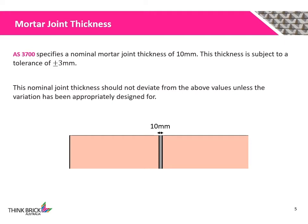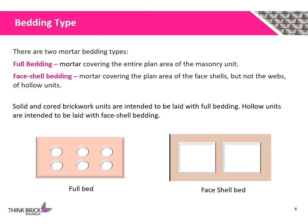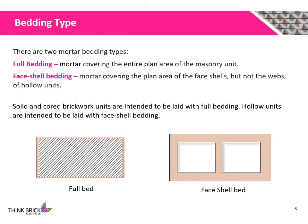AS3700 specifies a nominal mortar joint thickness of 10 mm, which is subject to a tolerance of 3 mm. This nominal joint thickness should not deviate from the above values unless the variation has been appropriately designed for. There are two types of mortar beddings: full bedding, which covers the entire plan area of the masonry unit and is common in both solid and cored brick, and face shell bedding, which covers only the plan area of the face shells, not the webs, and is common in hollow units.